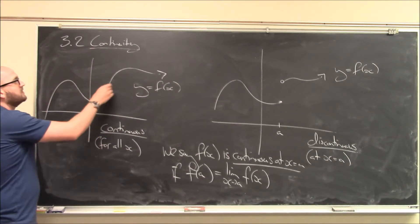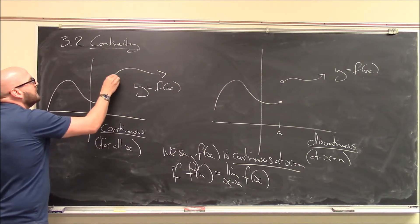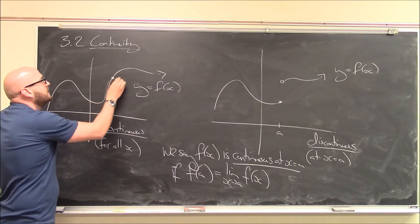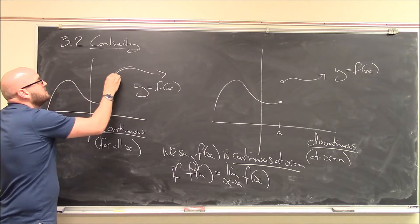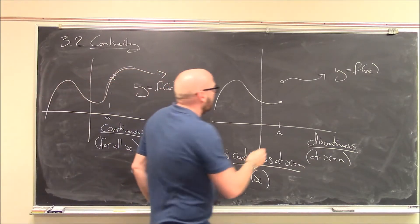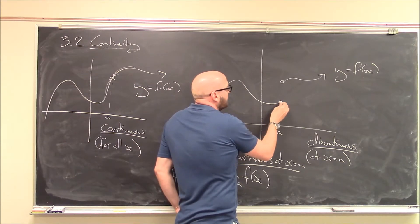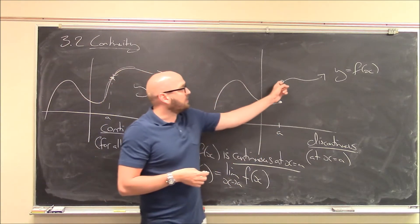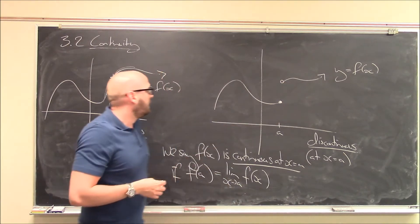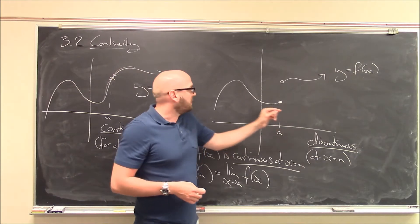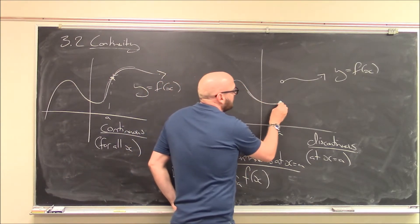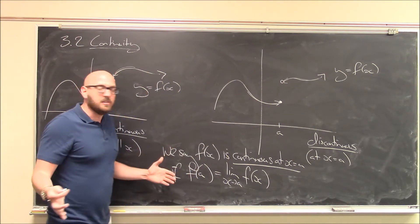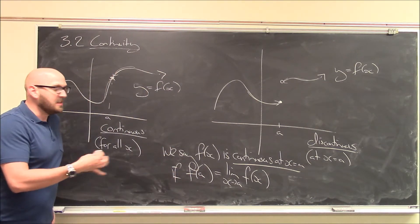Coming back to the examples: this is why the first function is continuous at all points. If I look at any point here and choose an arbitrary point a, my function value is indeed the same as the limit — as I approach this point from the left or the right, I'm approaching that function value. Meanwhile over here at x equals a, the function value exists — I've filled in this circle so that tells me the value of f of a. But unfortunately my limit doesn't exist, because as I approach x equals a from the left and from the right, I'm approaching two different values. So the full limit doesn't even exist, and we're discontinuous at x equals a.